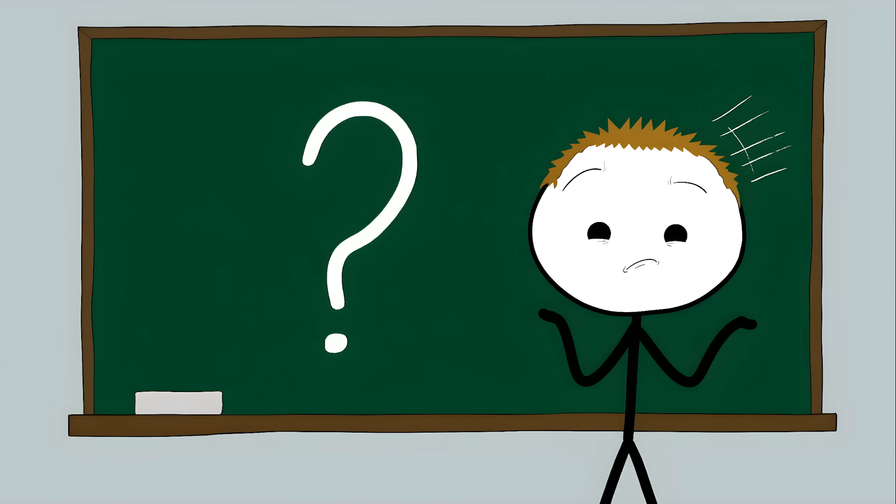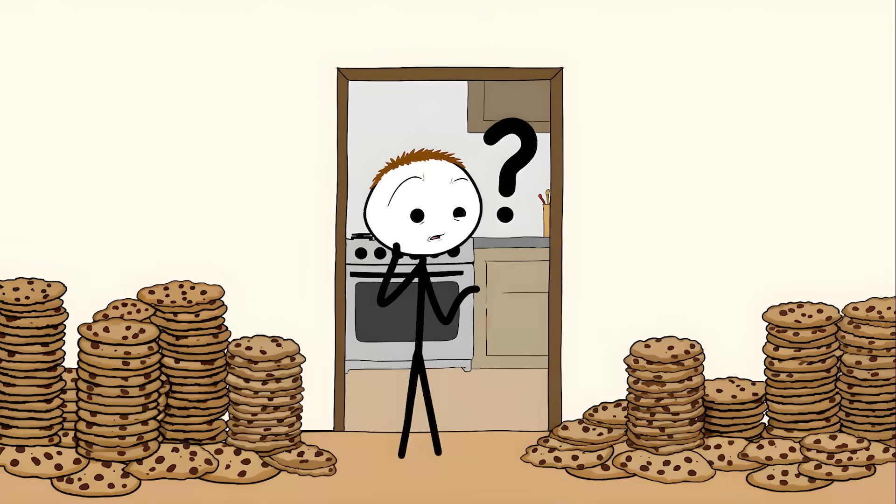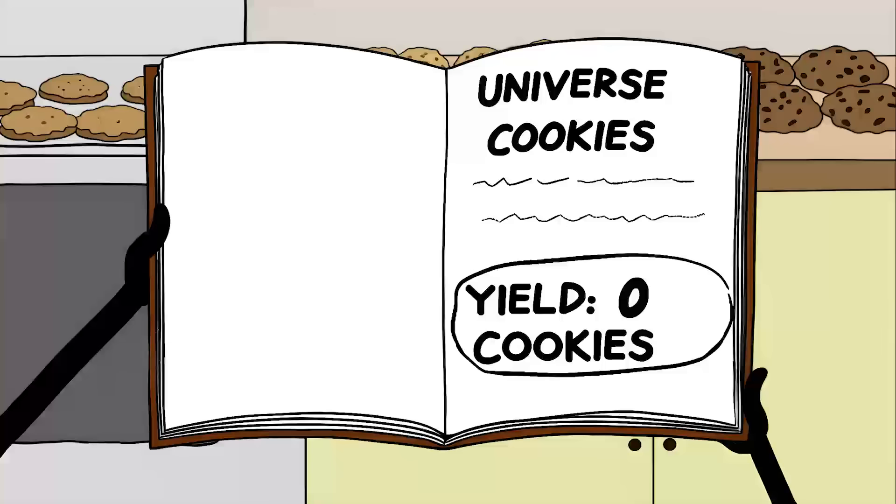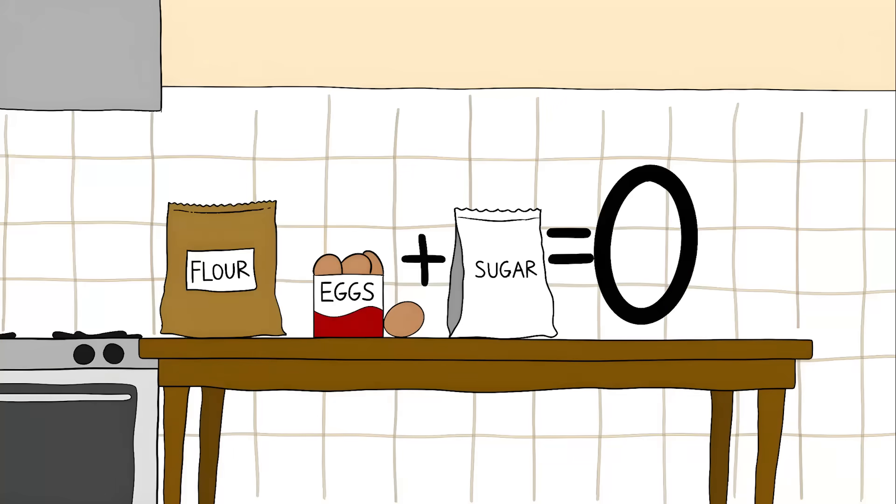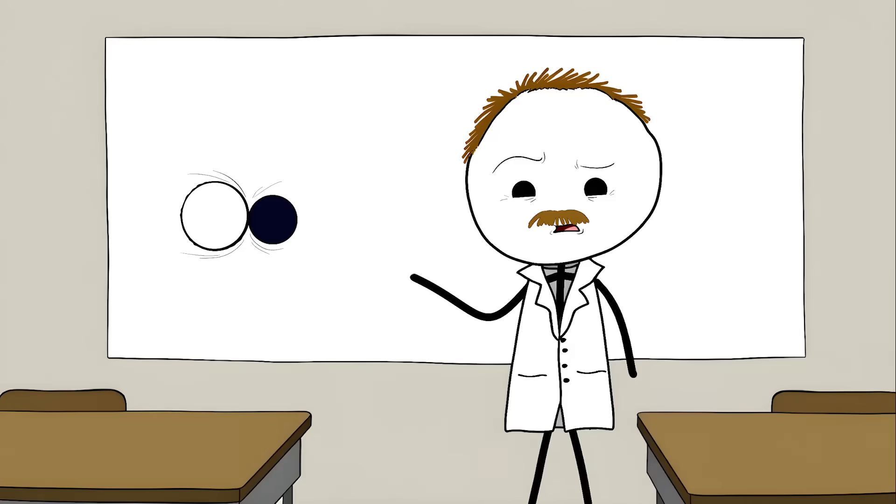Scientists have no idea why this happened. They know it must have happened because we exist, but they can't figure out how. It's like walking into a room where someone's baked a thousand cookies. The recipe clearly says it should make zero cookies. The ingredients only add up to zero cookies, but there they are, a thousand cookies sitting there.